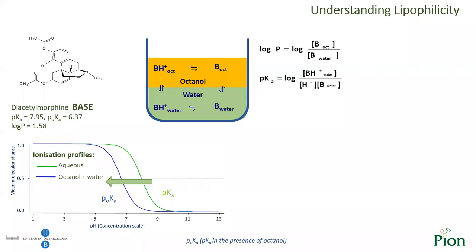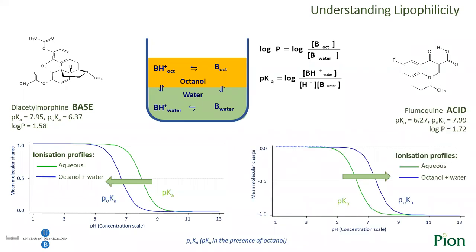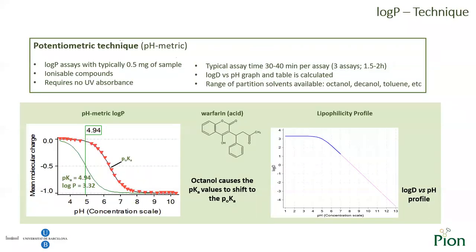It is quite interesting to observe that the pKa of bases like diacetylmorphine measured in the presence of octanol shifts to lower pH values, similar to what we observed in the case of the pKa with solvents. The potentiometric technique is used for the determination of log P and is applicable only for ionizable compounds, meaning that the aqueous pKa of the compound must also be determined. A titration is performed between pH 2 and 12, and mass and charge balance equations are used for the determination of the pKa in the presence of octanol. Using the aqueous pKa and the log P, the log D versus pH profile is calculated.